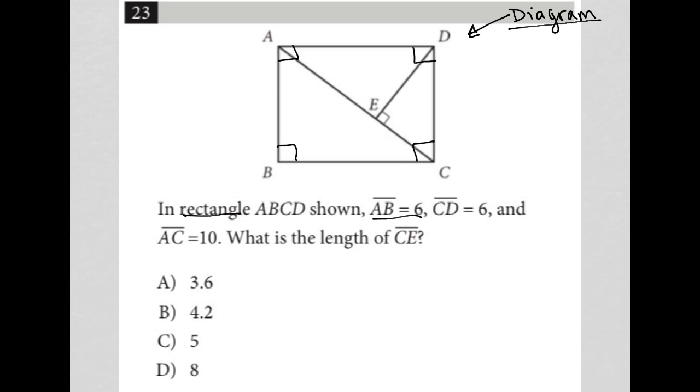I'm also told that AB is equal to 6, CD is equal to 6, and AC is equal to 10. And then I'm asked, what is the length of CE? So here is my x value.